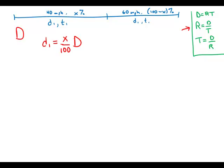That's the distance in the first part of the trip. D2, that's the complementary percent, 100 minus X. So I'm going to write 100 minus X as a fraction, 100 minus X over 100 times D. That's distance 2.